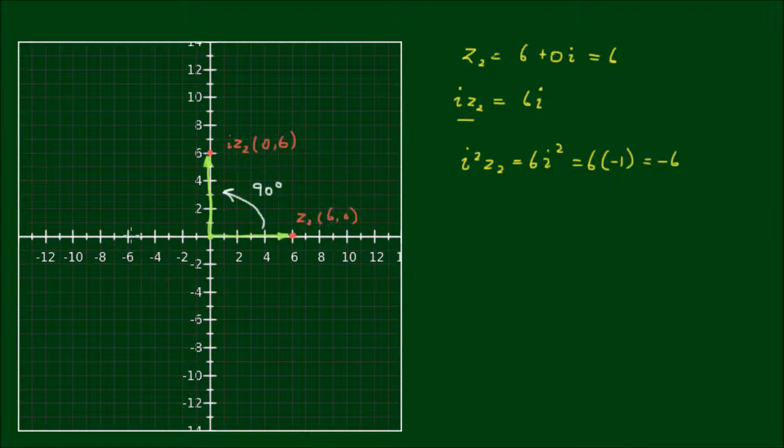So we can plot the new coordinates i squared z2 of negative 6, 0 on the complex plane. And it's just obviously negative 6 on the real axis. And if we drew a vector to it from the origin, we can see that the vertical vector has been rotated again by 90 degrees anticlockwise.